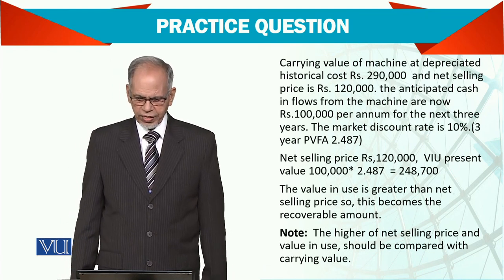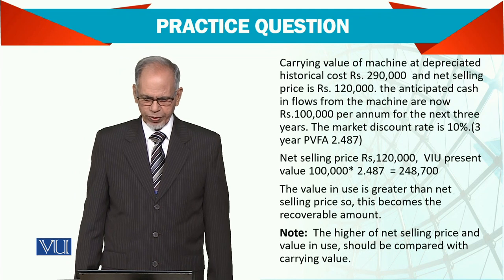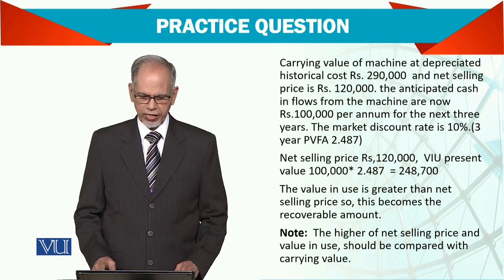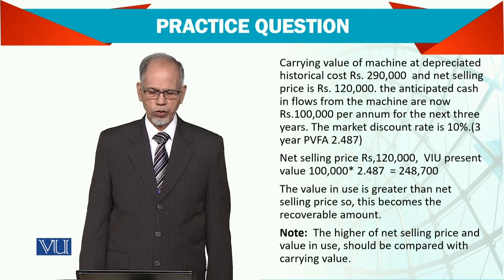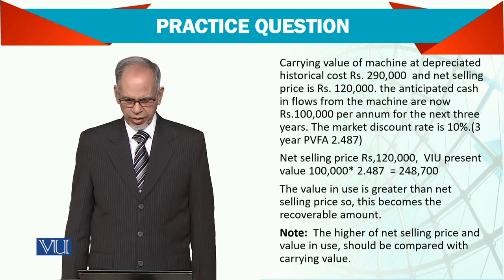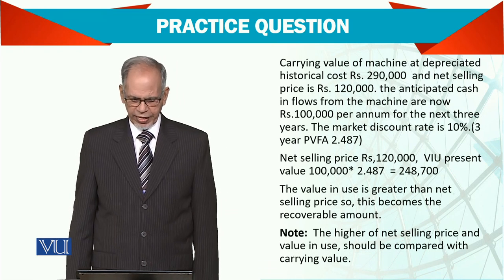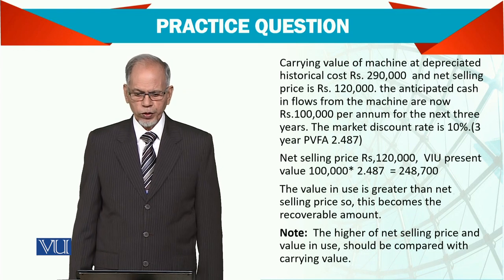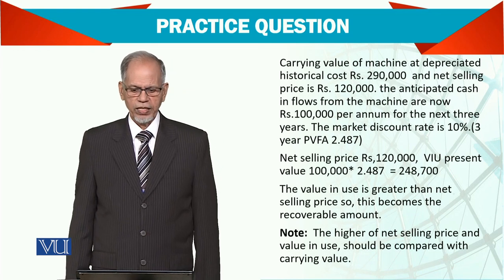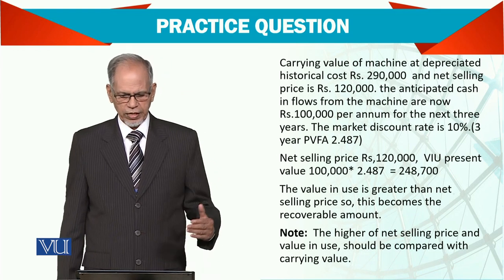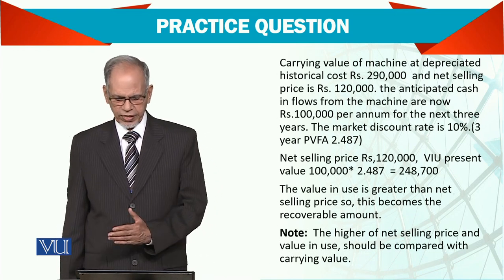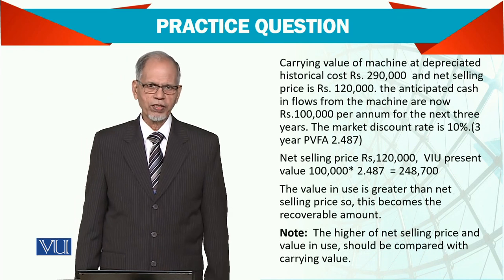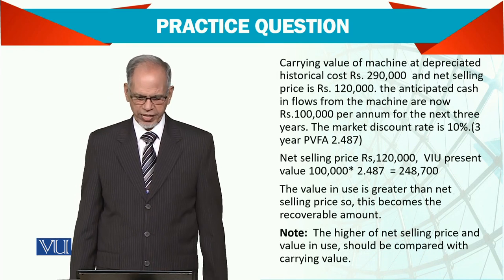The market discount rate is 10% and the present value factor at 10% for 3 years is 2.487. The net selling price is $120,000 and the value in use is $100,000 multiplied by the factor, which comes to $248,700.